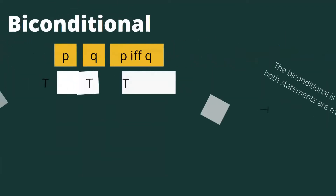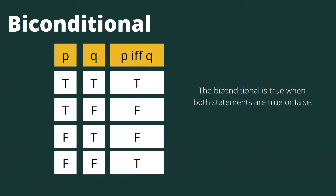The last one is the biconditional. The biconditional is true when both statements are the same — both true or both false. Two statements again, p and q: p if and only if q. Both true would be true. If they are different — true and false — that would be false, and the same goes for false and true, that would be false. And then both false: false if and only if false, that would be true.